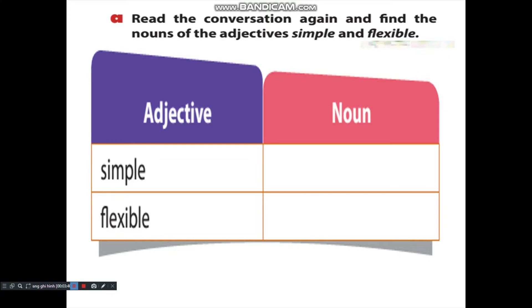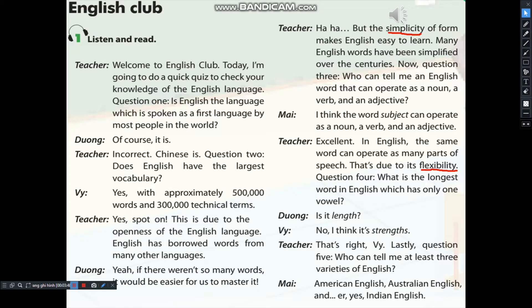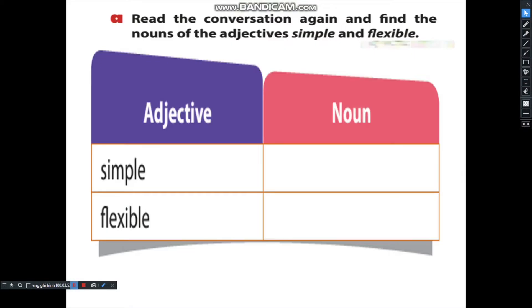Activity 1: Read the conversation again and find the nouns of the adjectives 'simple' and 'flexible'. As you can see, it's simplicity and flexibility. Simple → simplicity. Flexible → flexibility. Now let's repeat: simple, simplicity; flexible, flexibility.